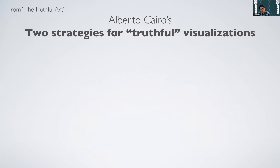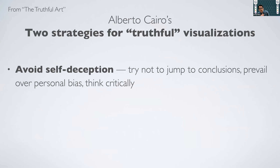Alberto Cairo also has recommendations for creating truthful visualizations. He says: avoid self-deception. When we go to analyze results and work with our data, we have some theory in mind, some hypothesis, and we're inclined to look for that. We have to be careful to avoid our own personal bias of what we think the data will tell us, and try to say: I'm just going to visualize the data and let the data tell me the trends. If I go in with a particular agenda and want to see a particular result, I may trick myself into finding it even if it's not really there.